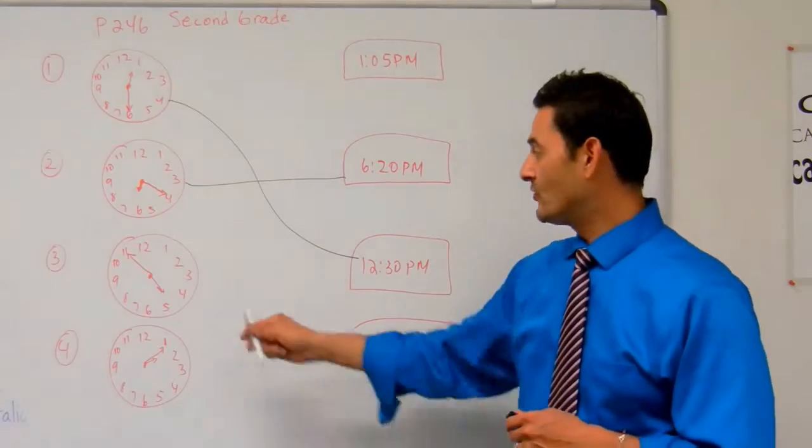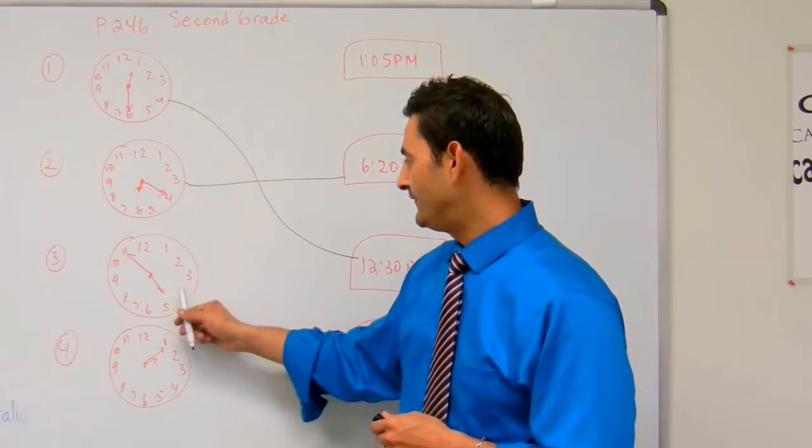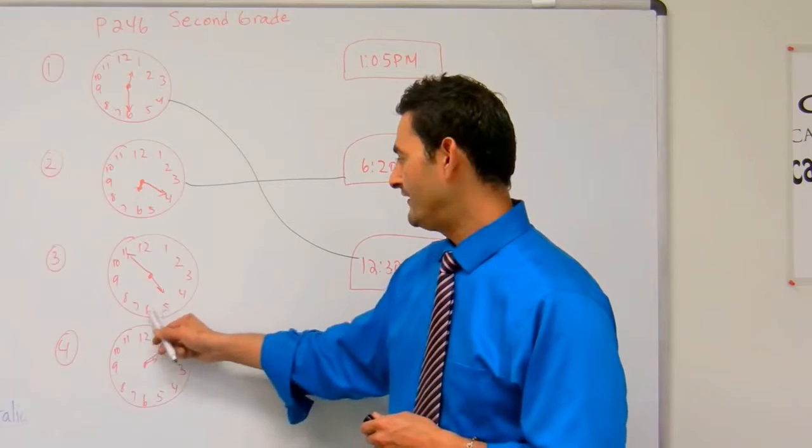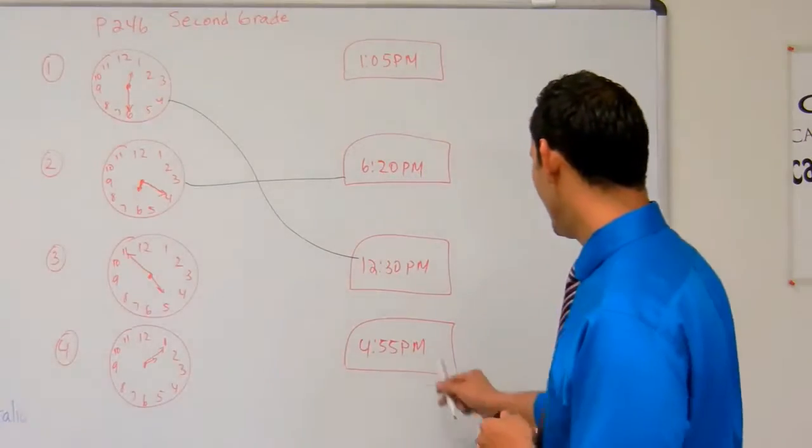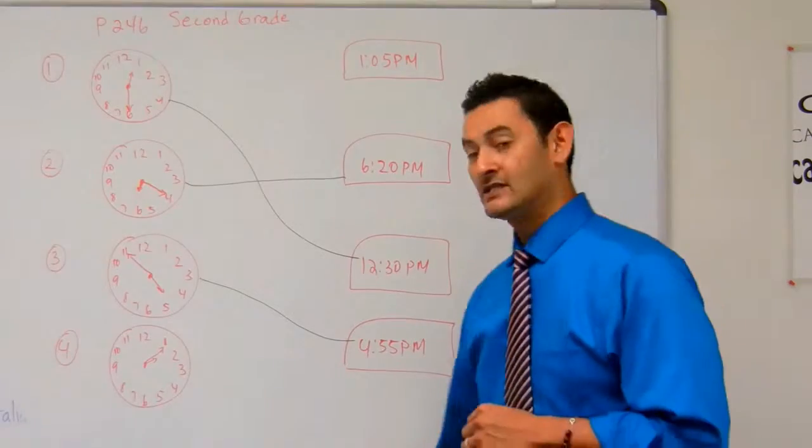And the last one we're going to work on together is this one. The hour hand is past the 4, so that's going to be 4. And then the minute hand is there. 5, 10, 15, 20, 25, 30, 35, 40, 45, 50, 55, 4:55 PM. There it is. We're going to go ahead and match that there.